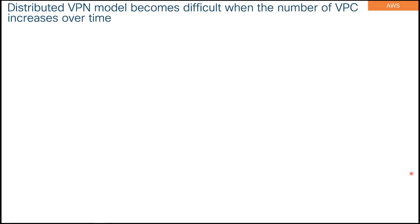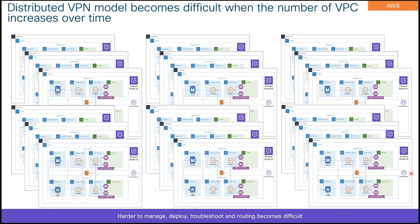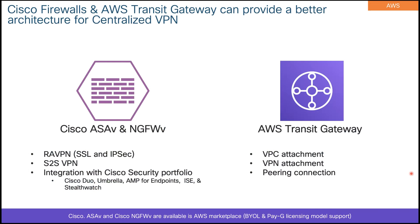The model I showed you was a distributed model. Imagine with time when you grow and have multiple VPCs — if you have hundreds of VPCs, you cannot really go out and deploy a firewall in each VPC because it is harder to manage, deploy, troubleshoot, and it makes routing very difficult. So what we have done is adopt a solution that integrates with AWS Transit Gateway.